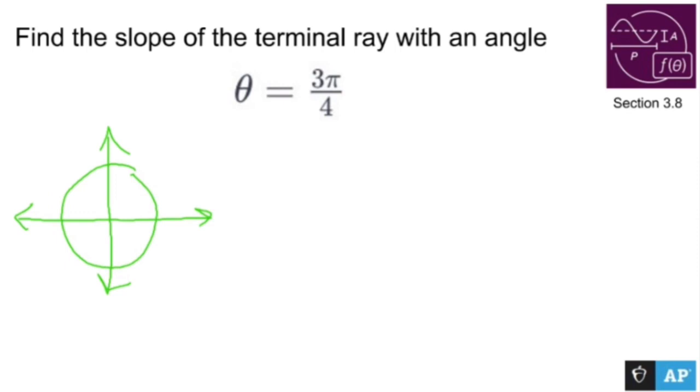3 pi over 4 is three quarters of my way from zero to pi. So 3 pi over 4 lives in that middle dot right there. Now, terminal ray means that guy compared to that guy. So that's my theta and my theta exists at 3 pi over 4.